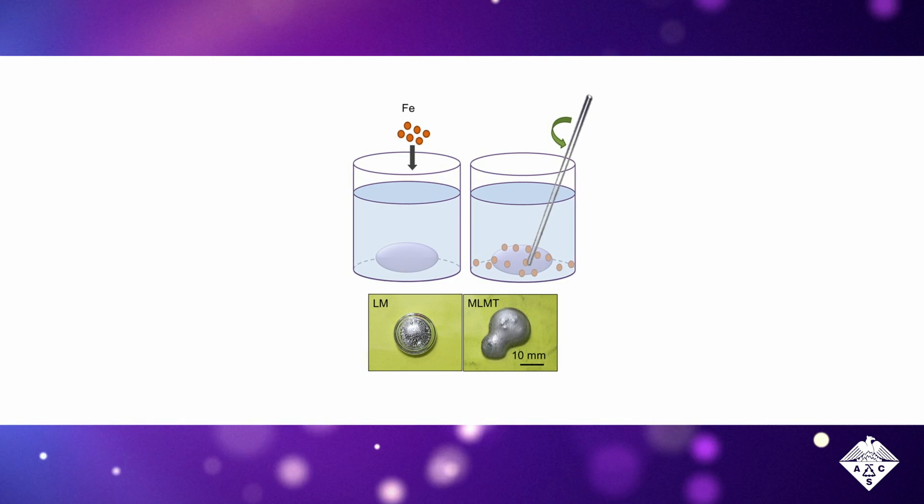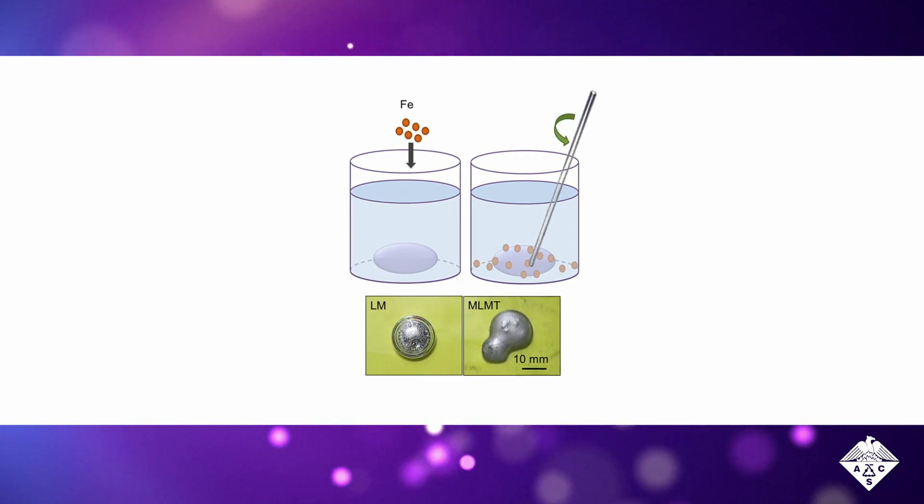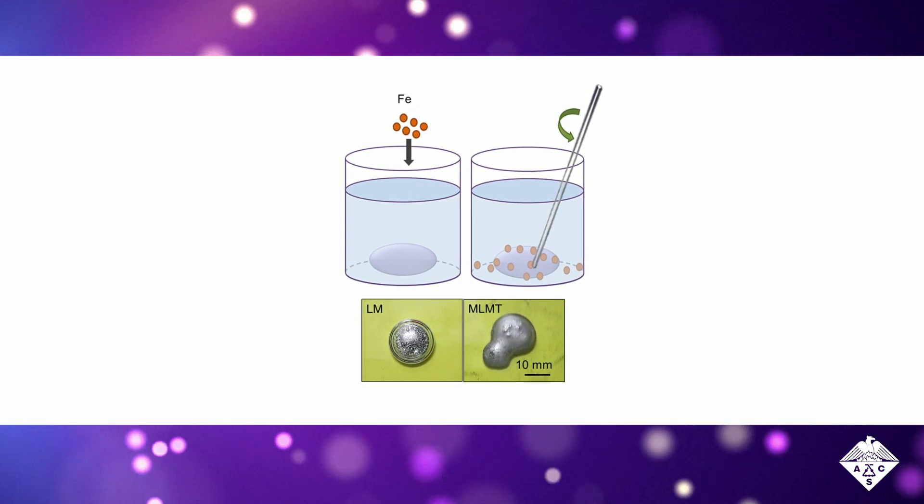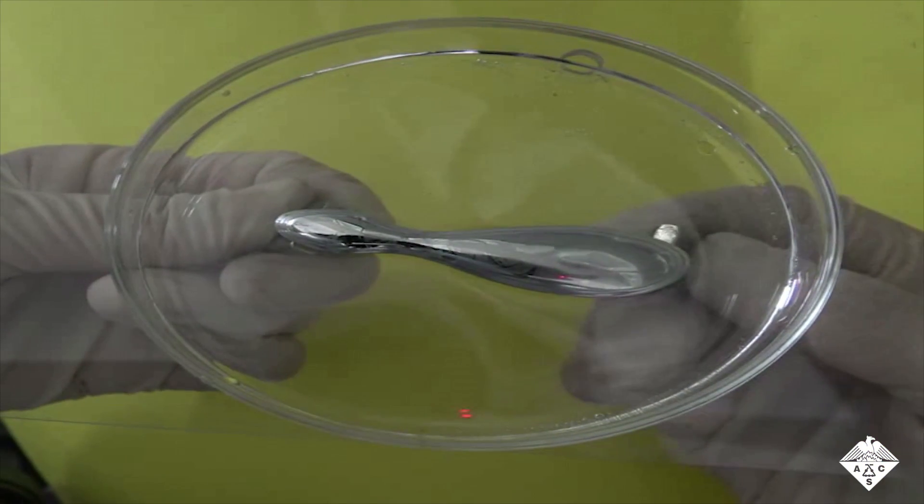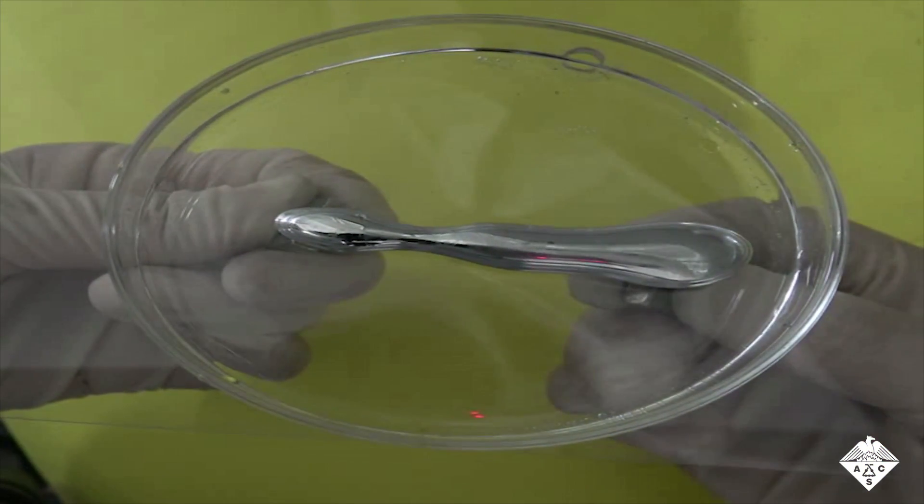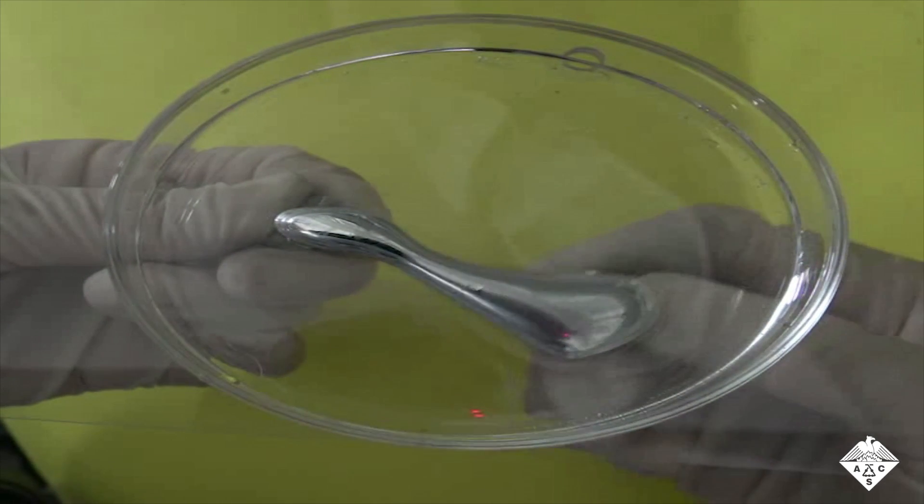However, most magnetic liquid metals have high surface tension and can only move horizontally. Liang Hu, Jing Liu, and colleagues wanted to make a magnetic liquid metal that they could move and stretch both horizontally and vertically.